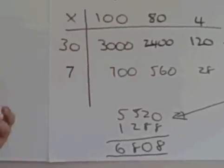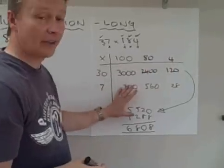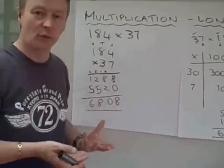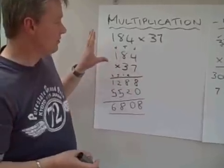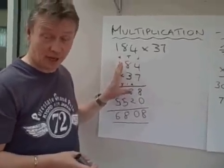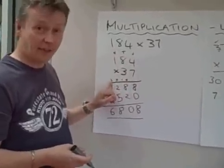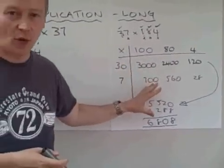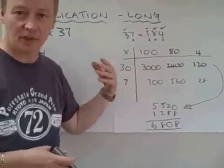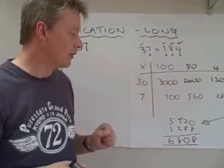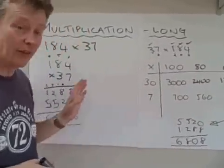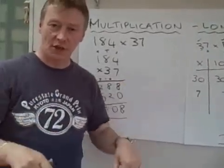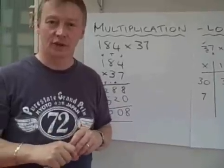So, we can still get the same answer by using this grid method, and by using the formal method, and it's entirely up to you which one you choose. This one is okay, you need to know your times tables and you need to be able to carry. This one takes a little bit longer to present, but you don't need to know your times tables as well, and you can also work out, perhaps, if you go wrong with something, where you've gone wrong. Those are the two methods for doing long multiplication, and if you try them, there's some question sheets at the bottom of the screen for you to have a go at.